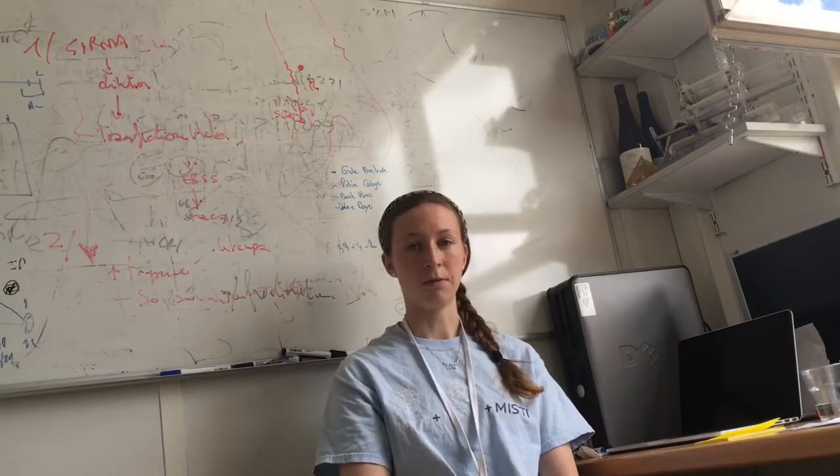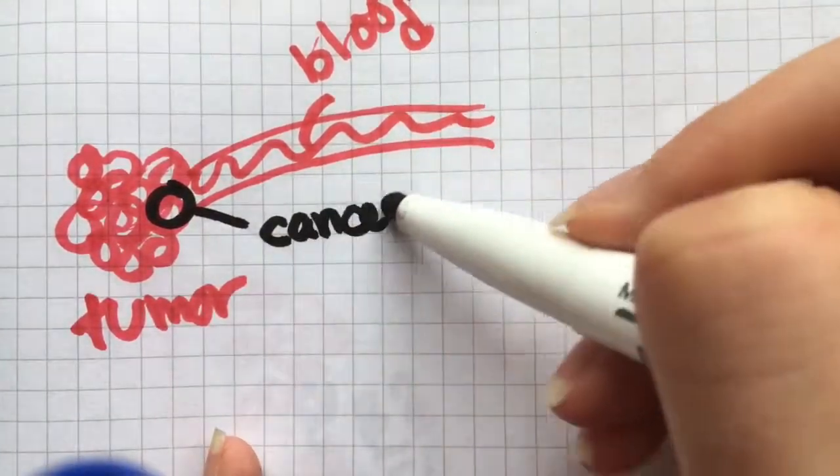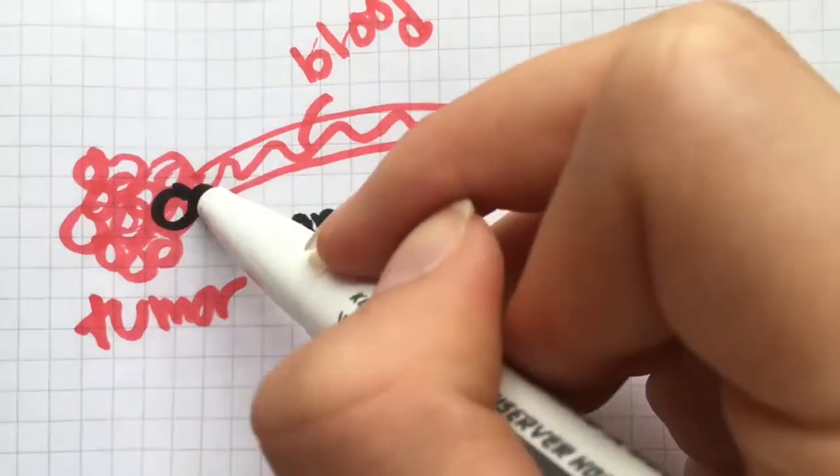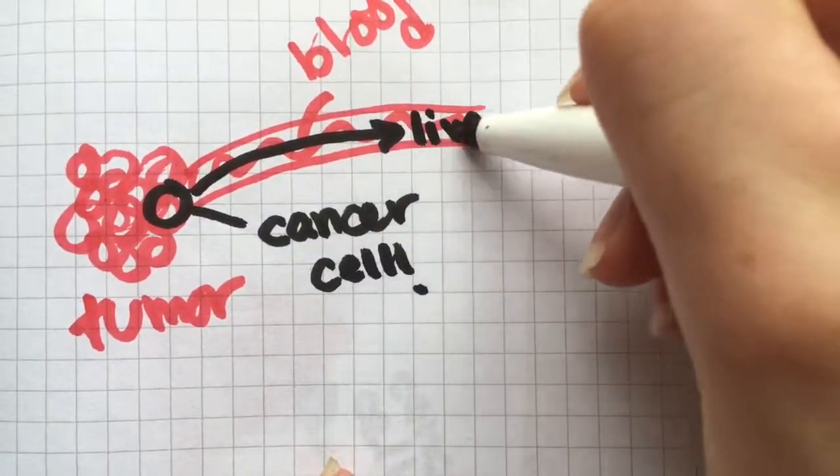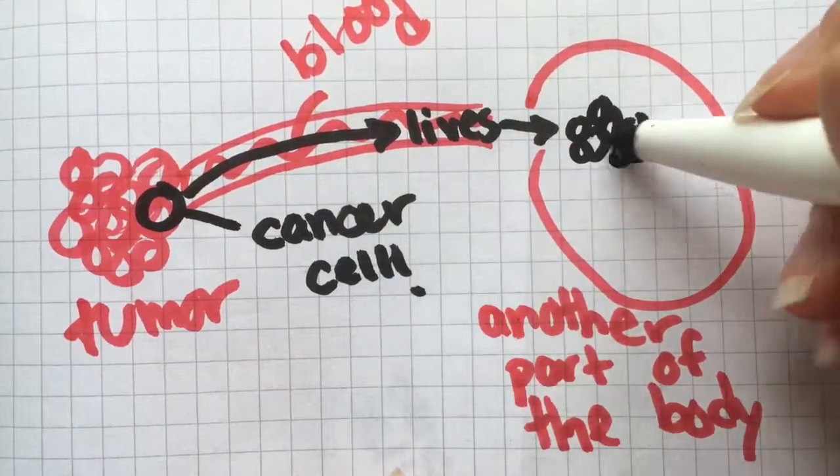Now, why do we care? When cancer cells can survive in suspension, this means that they can detach from a tumor, flow through the body and attach somewhere else, or how they can metastasize.